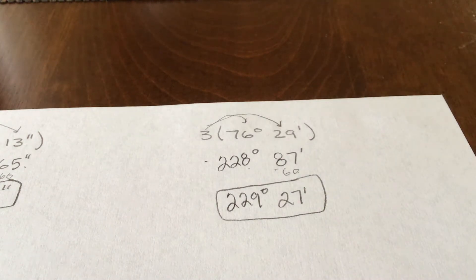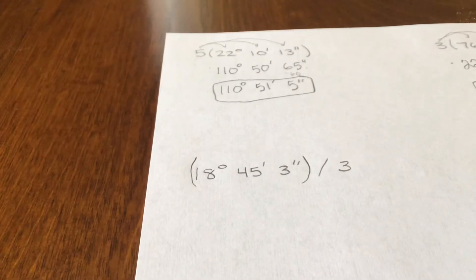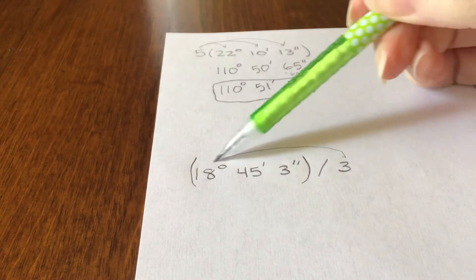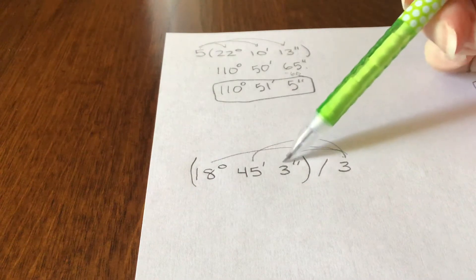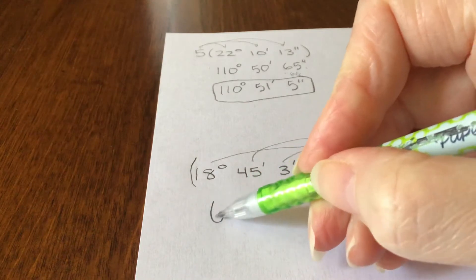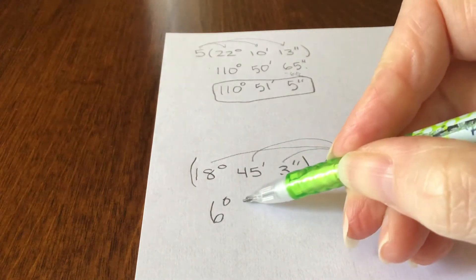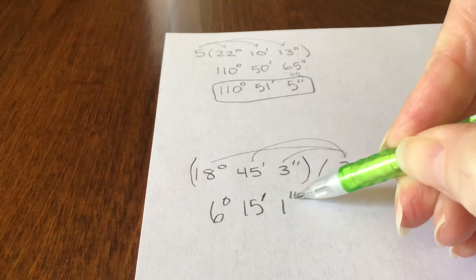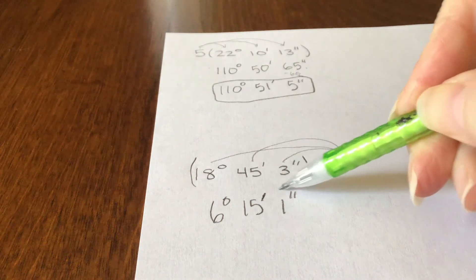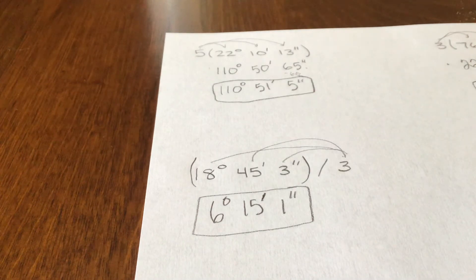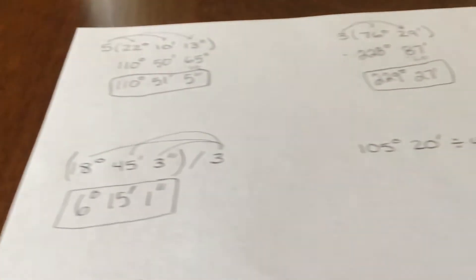All right, let's try the division ones here. The division ones are done very similar also, is that you would kind of do like the distributive property and divide each one of these by 3. So we're going to do 18 divided by 3 is 6 degrees. 45 divided by 3 is 15. And 3 divided by 3 would be 1. And we don't have any regrouping to do because nothing's more than 60 on there.